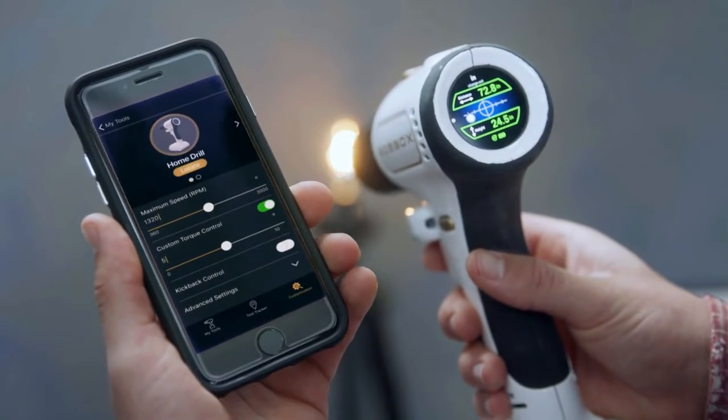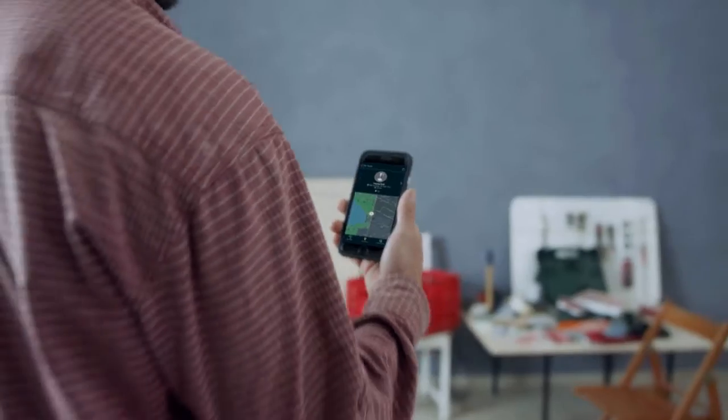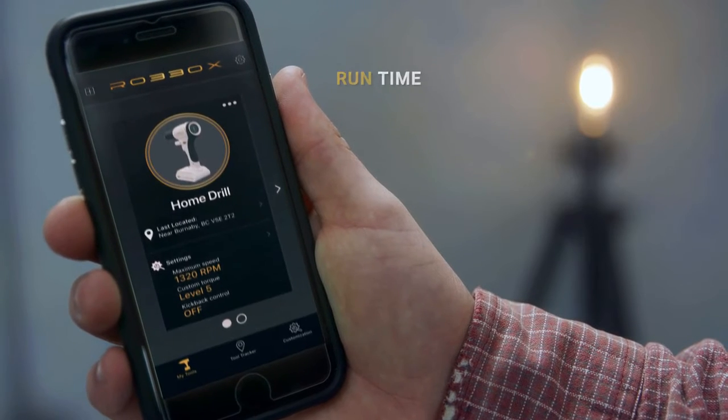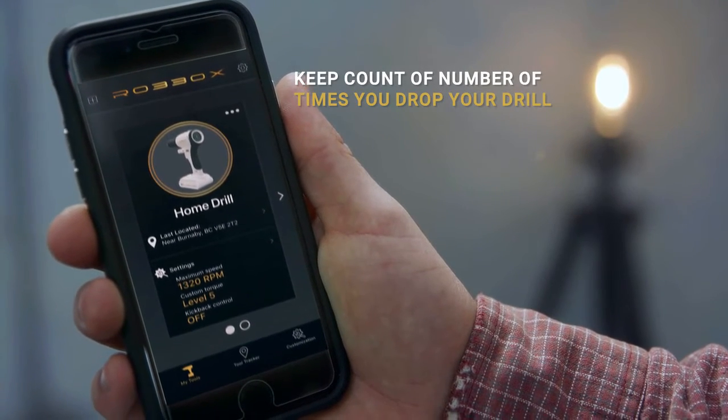Since it's smart, X-Drill comes with an app with useful information. You can set it to save measurements, find your tool, lock it if it's stolen, set up user profiles, get usage data, runtime torque and speed, and keep count of the number of times you dropped the drill. Yeah, but you didn't even think that's a thing. We did.